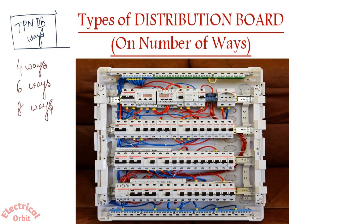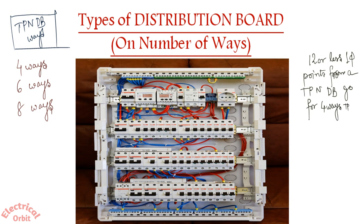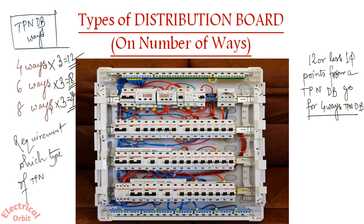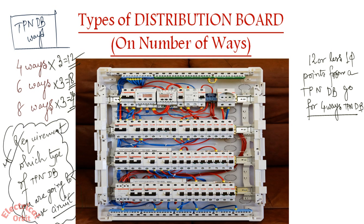There is a simple rule for TPN DB ways: the number of ways is multiplied by three to get the number of single-phase outputs. From a four-way TPN DB you get 12 single-phase outputs; from a six-way you get 18 outputs; and from an eight-way you get 24 single-phase outputs. You choose the TPN DB type based on your requirements.